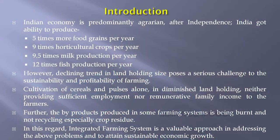Let me start with a brief introduction. We all know that the Indian economy is predominantly an agrarian economy. After independence, India gained the ability to produce 5 times more food grain, 9 times more horticulture crops, 9.5 times more milk, and moreover 12 times more fish production per year.